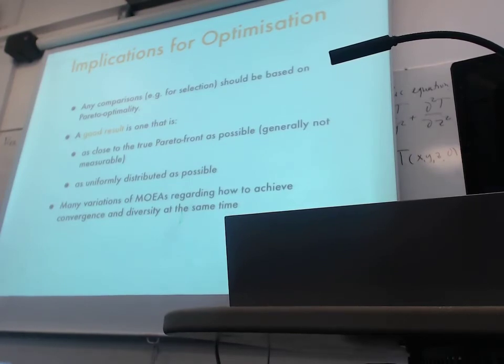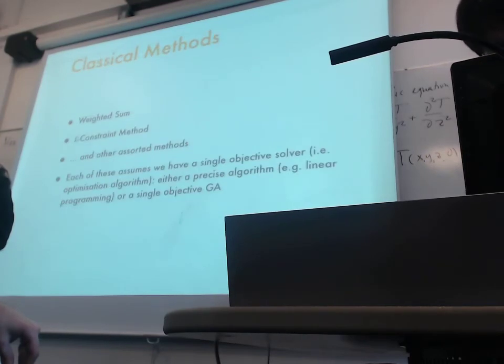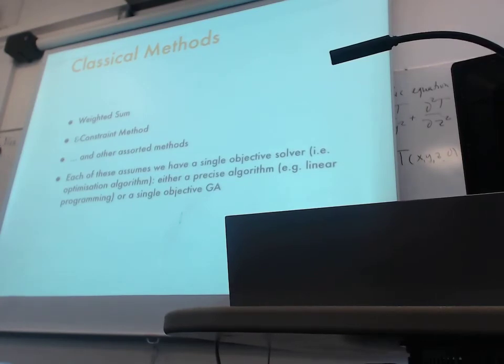So, now we know what sort of dominance concept is. Basically, what we have defined is which solution is better than the other solution. Given two solutions, if you are doing single objective optimization, you just compare the fitness value. If you are doing multi-objective optimization, you first see whether there's any Pareto dominance relation. If not, they are non-dominated. So any comparisons, for example, to apply the selection operator, should be based on Pareto optimality. So if one solution dominates the other, then we select that. A good result, result of the optimization, should be as close to the true Pareto front as possible. But because we do not know the true Pareto front, this is generally not really exactly measurable. And also, what we want to achieve is a front that's as uniformly distributed as possible.